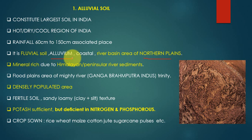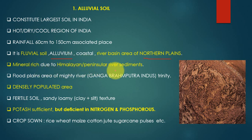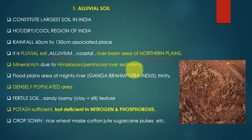This soil is formed by rivers through erosion. At the end of a river's journey, the sediments left behind form this soil. So alluvial soil is also known as alluvium, sedimentary soil, or depositional soil. This soil is mineral-rich due to Himalayan river sediments from rivers like the Ganga, Indus, and Brahmaputra. It is formed by the action of rivers and floods in areas of mighty rivers.